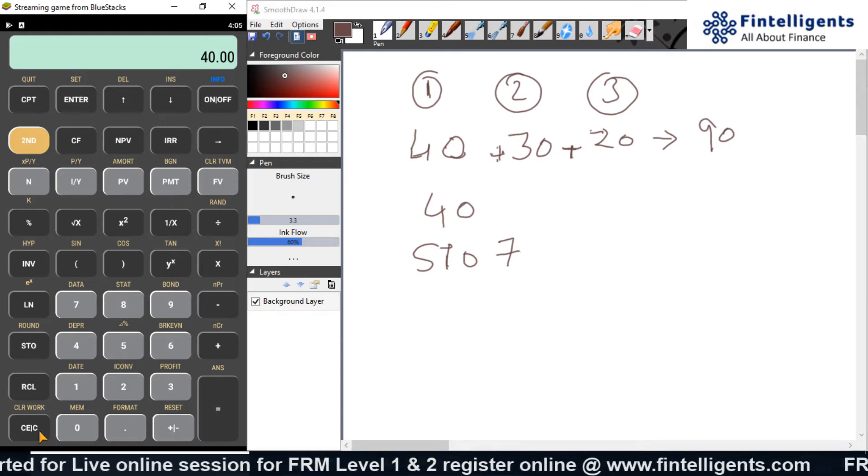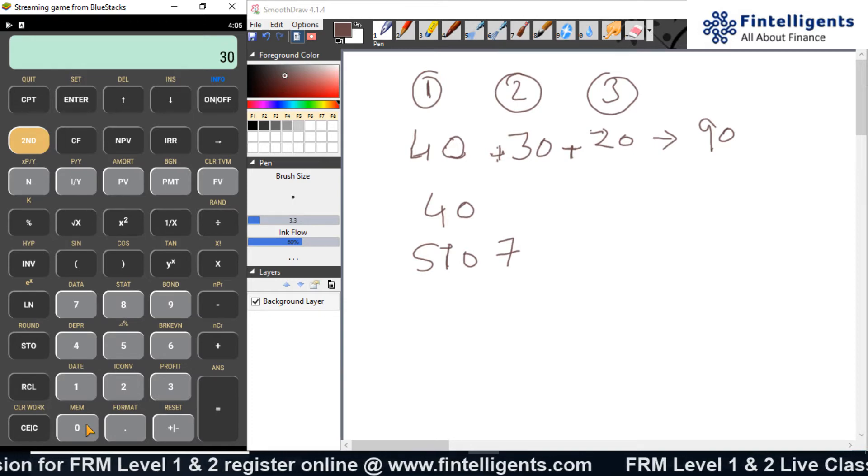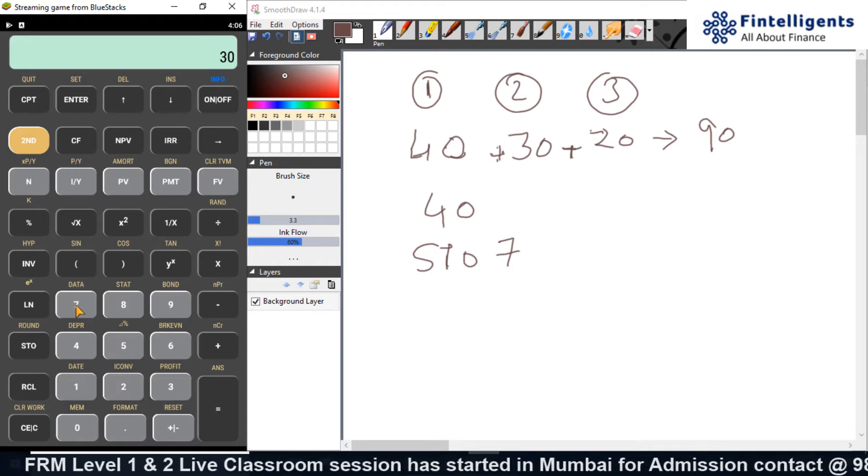And then I do the second calculation which gives me an answer of 30. How do I add it to 40? I can do something which will add to 40 and again store that added number to 7. How can I do it?